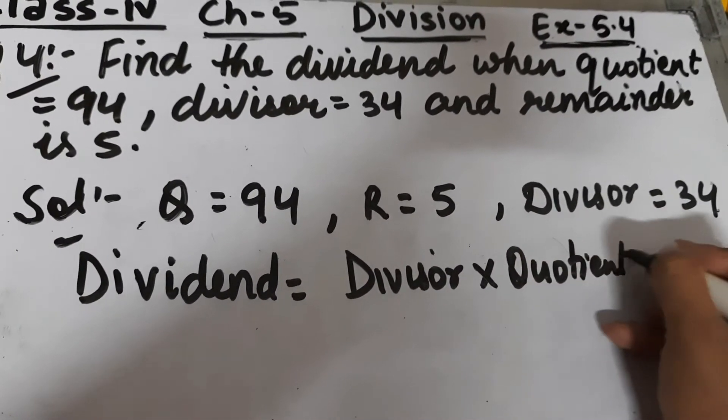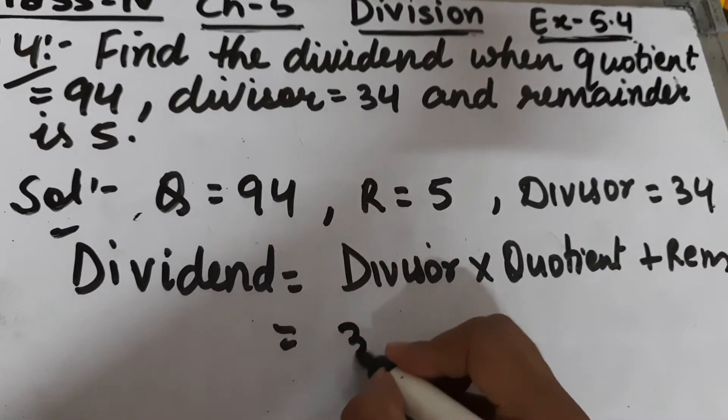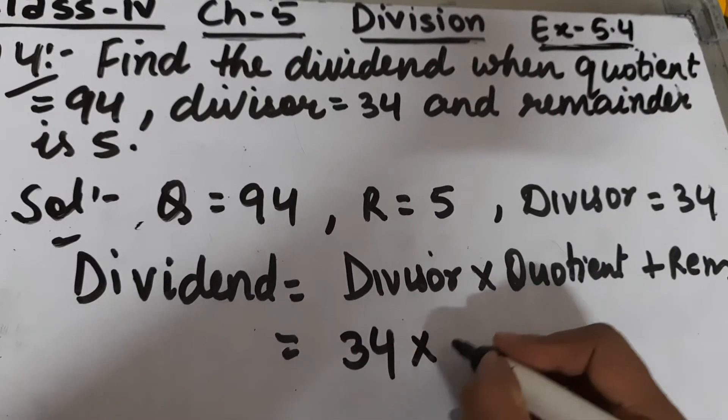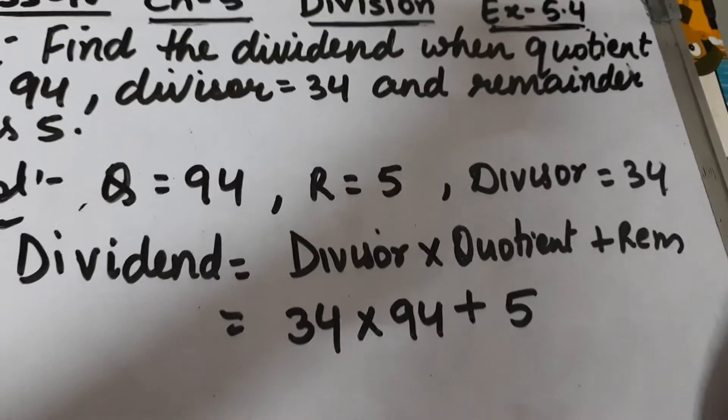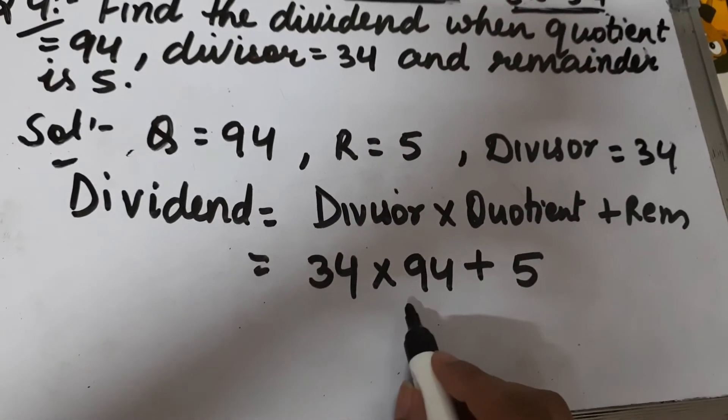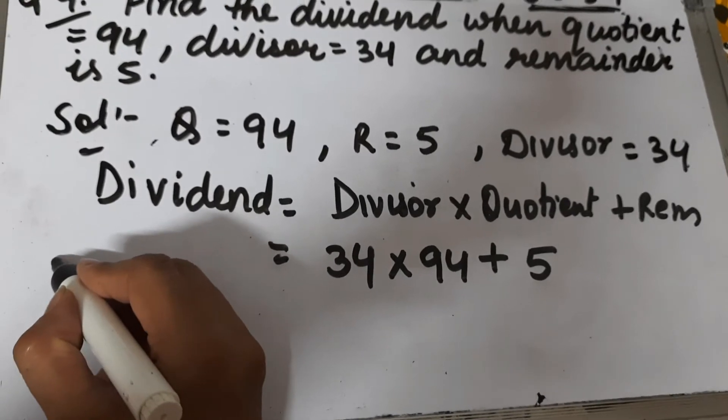What we do is multiply the divisor by the quotient. Divisor is 34, quotient is 94, and add the remainder to it. So we multiply 34 by 94.